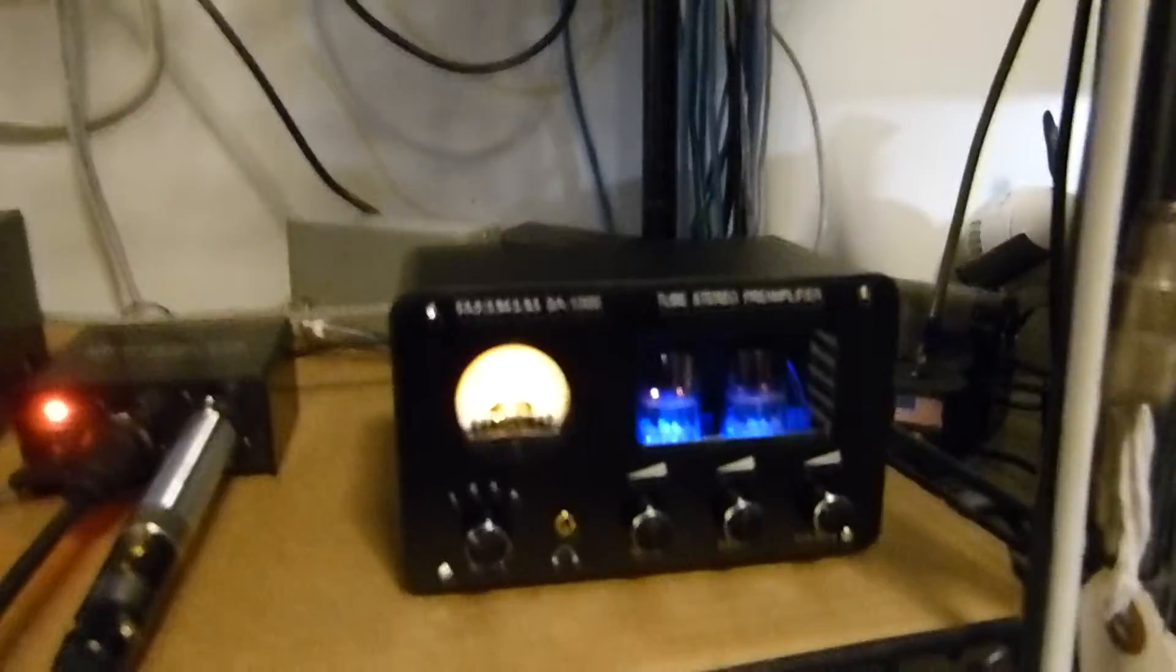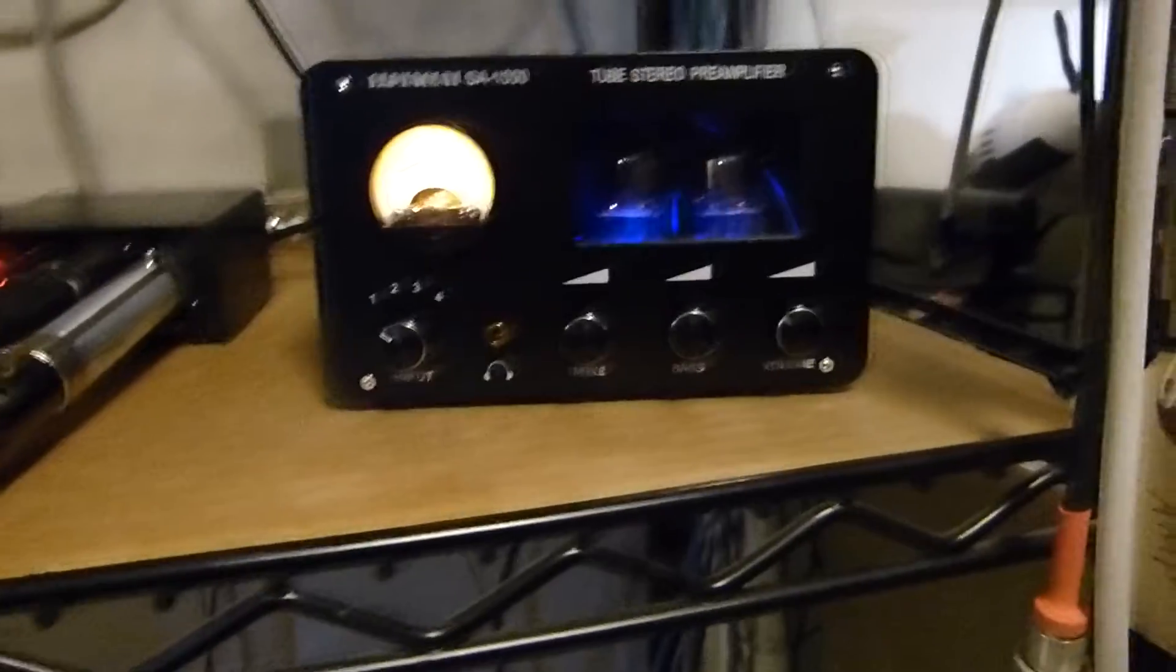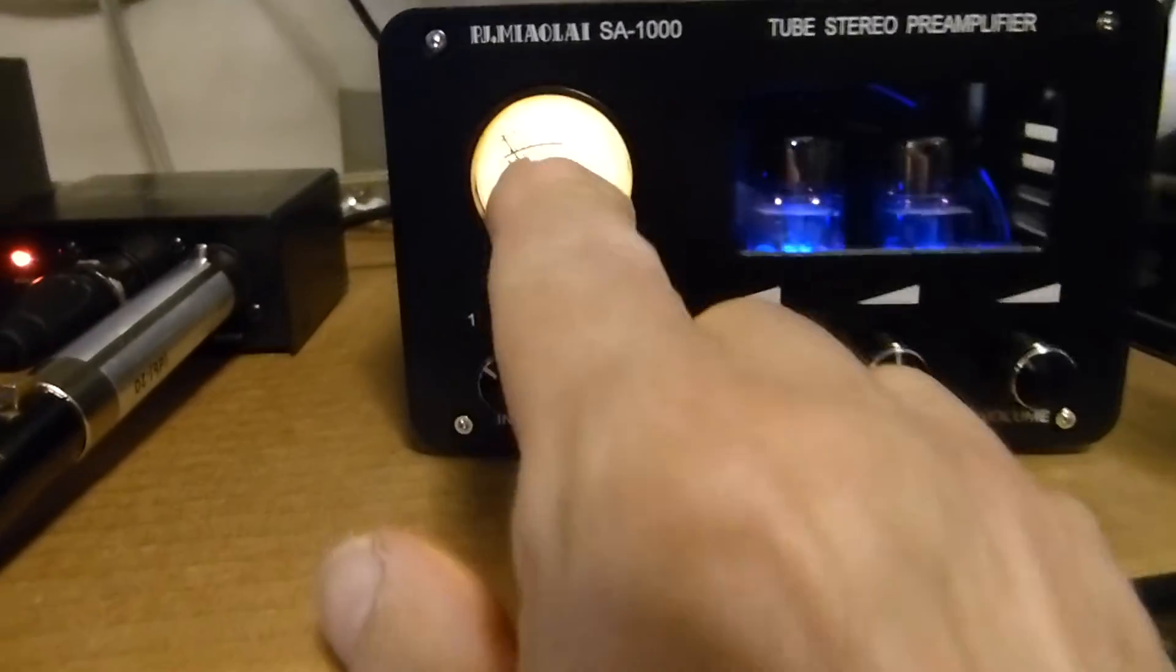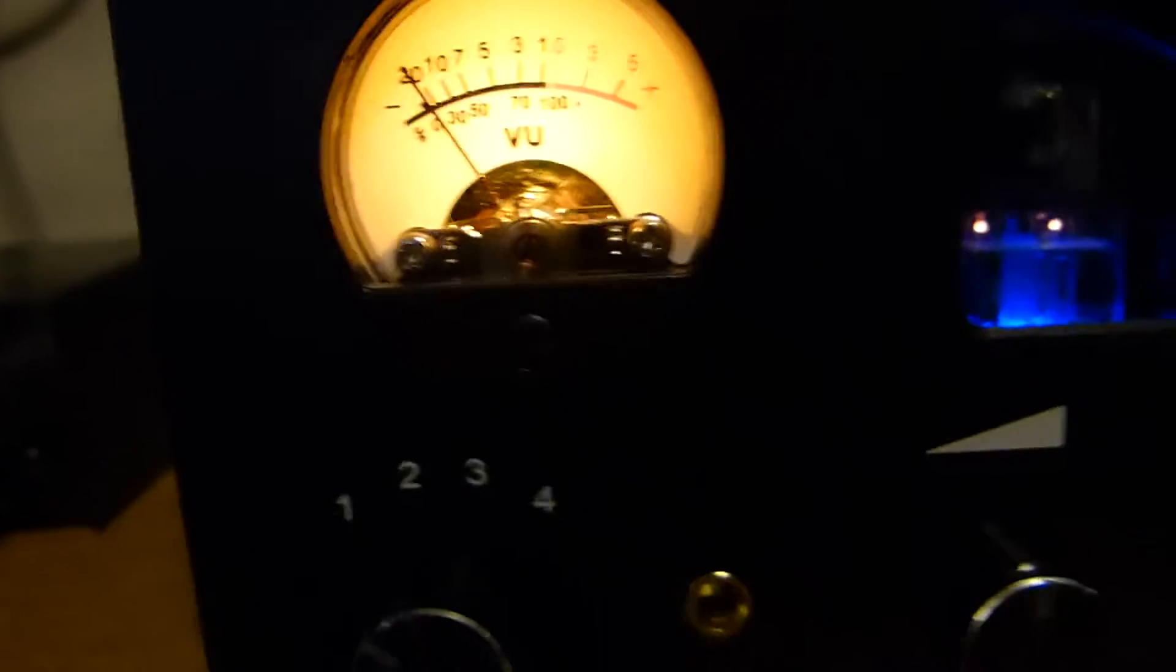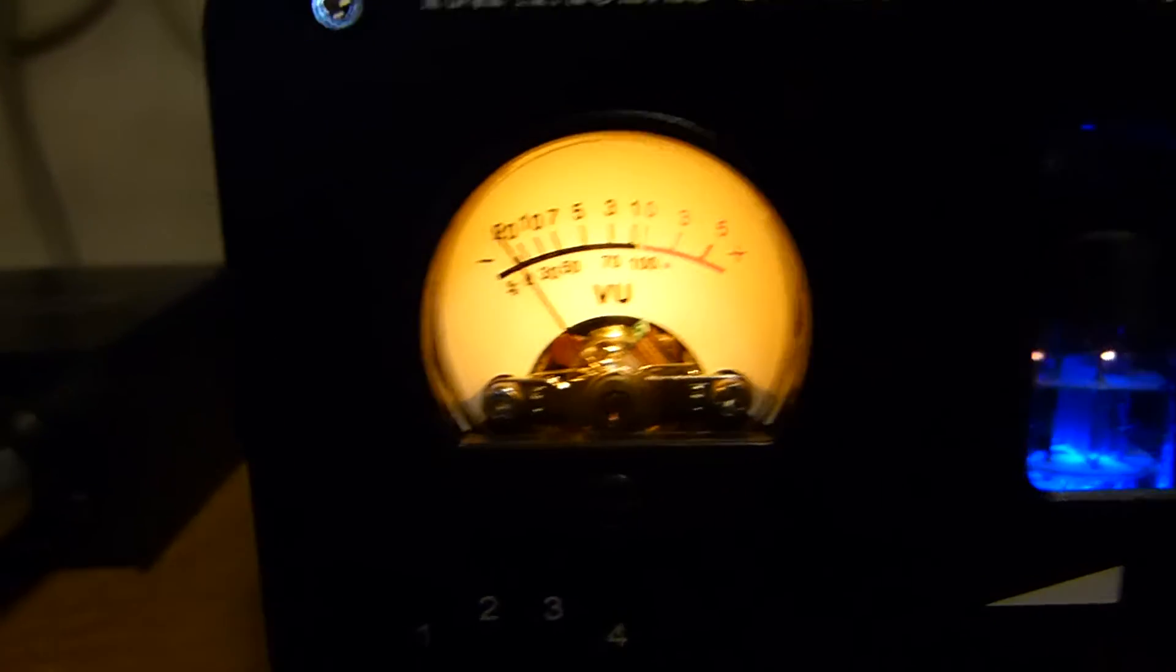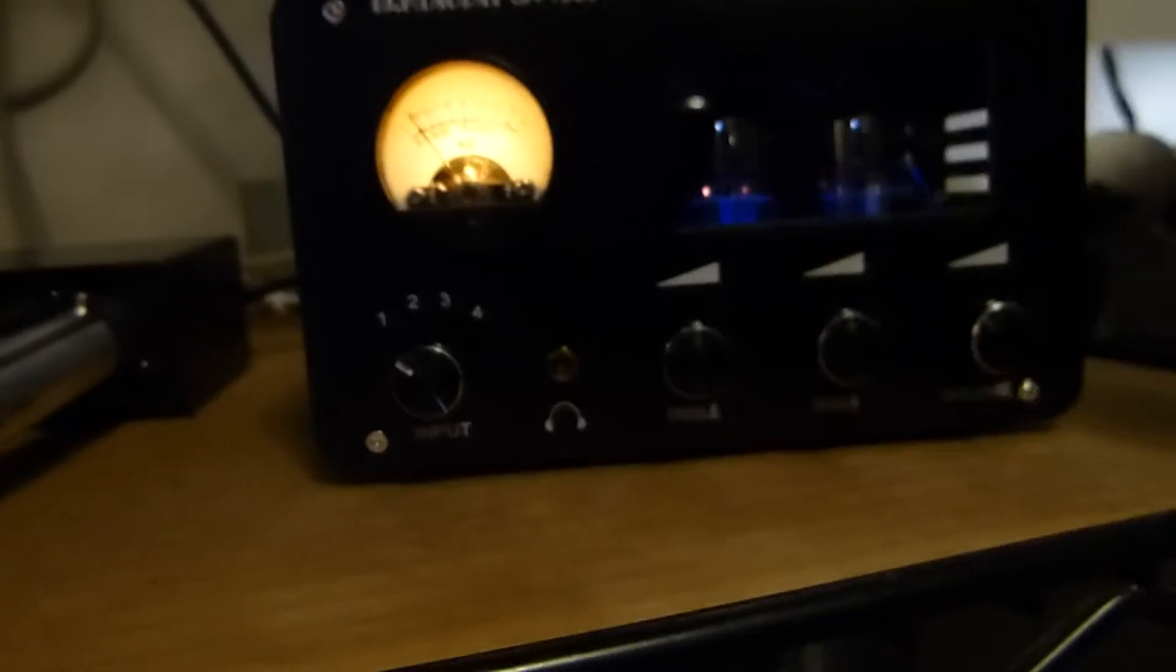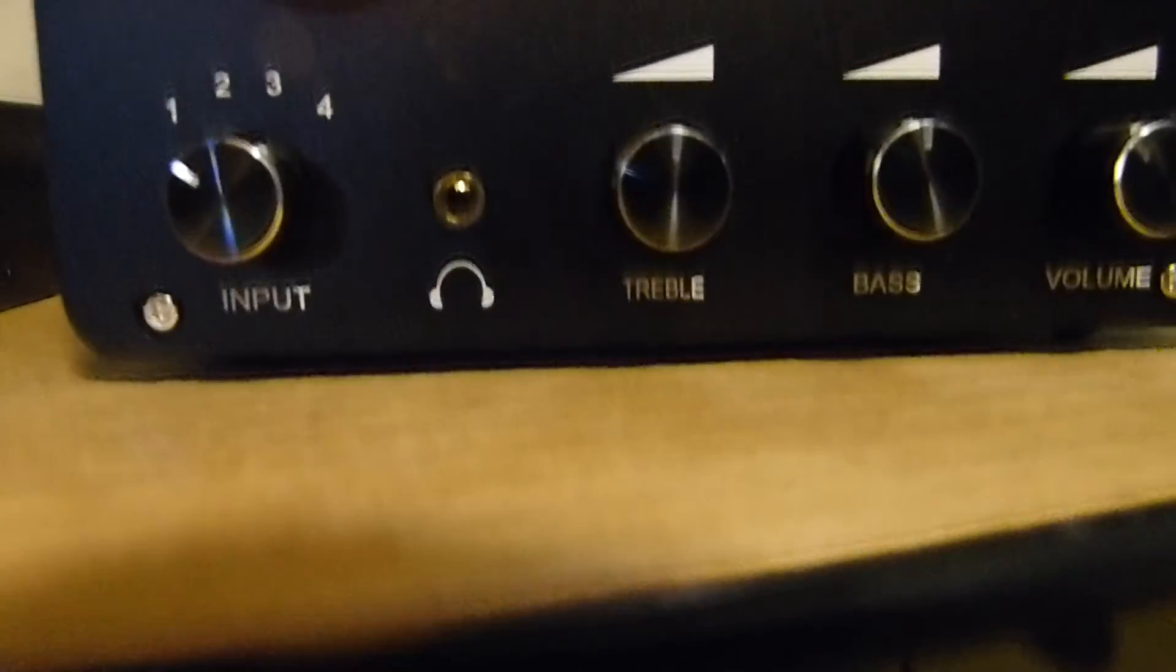Then it comes out of there and goes into this little jewel right here. I just got this in today. I wanted some tone controls. You can actually see it modulating just a little bit right there if I don't overwhelm the camera. It's a little headphone amplifier, vacuum tube of course, got tone controls - treble, bass, and volume.